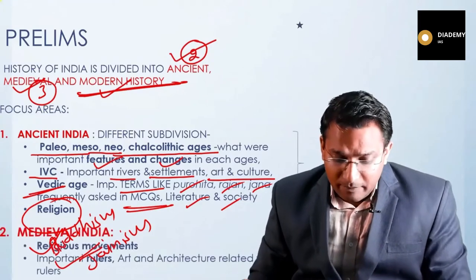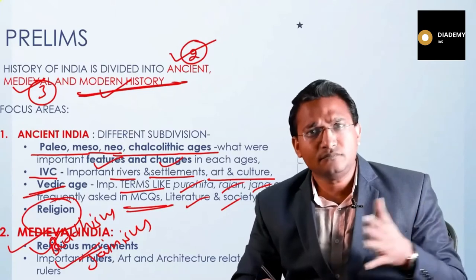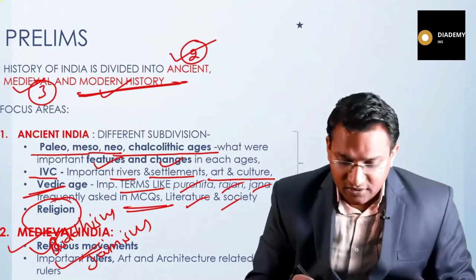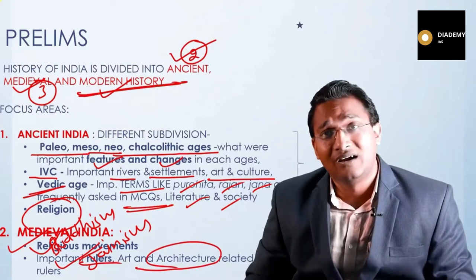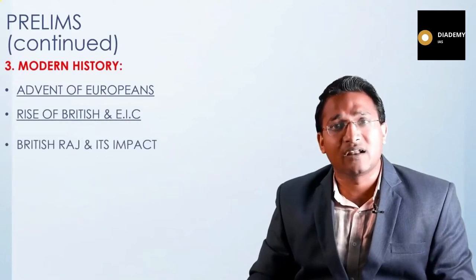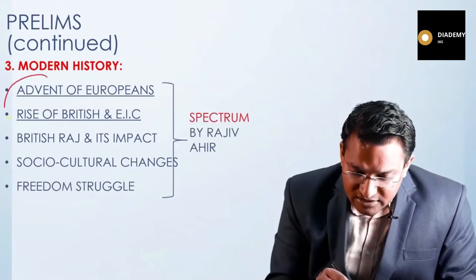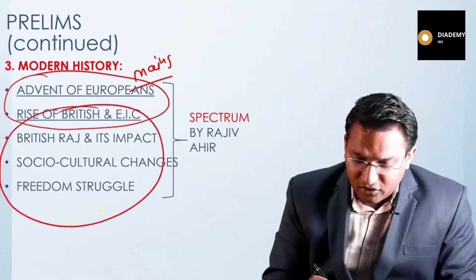Buddhism and Jainism are so important that almost every year at least one question comes from these areas — so prepare them very thoroughly. In medieval history, the first priority is religious movements, the Sufi movement, and important contributors to the Bhakti movement. Important rulers, their contributions, and art and architecture — especially Islamic architecture — are very crucial. Modern history covers the advent of Europeans, the rise of British power and the East India Company, British policies and their impact, socio-cultural changes, and the freedom struggle.